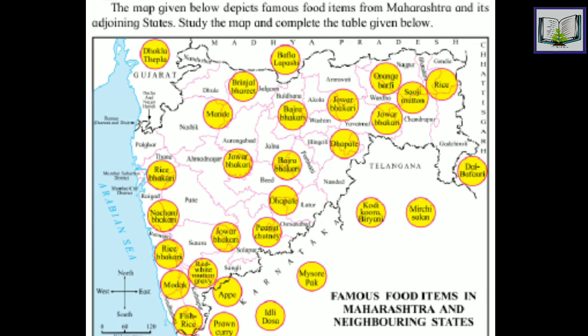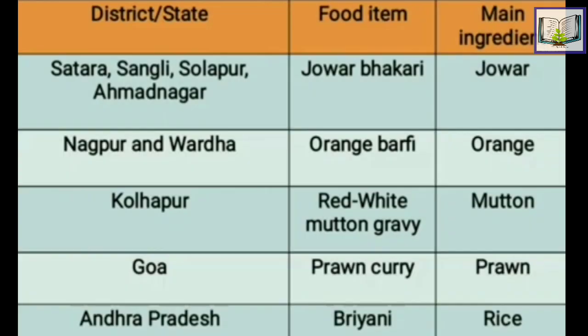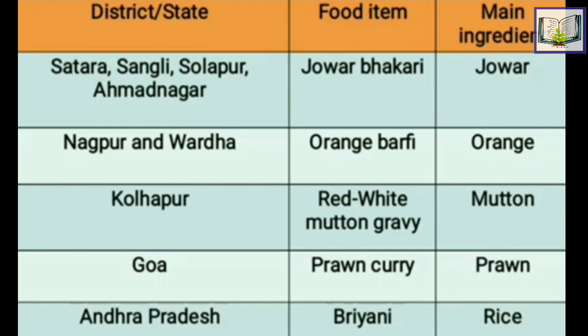This is a map of famous food items from Maharashtra and its adjoining (neighboring) states. In Gujarat, famous food items are dhokla and thepla. In Karnataka, idli, dosa, and Mysore paak are famous. In Telangana, mirchi salan is a famous food item. Let's make columns with the state name, food items, and main ingredients. Satara, Sangli, Solapur, Ahmednagar — jawar bhakri, main ingredient jawar. Nagpur and Wardha — orange barfi, main ingredient orange. Kolhapur — red and white mutton curry, main ingredient mutton. Goa — prawn curry, main ingredient prawn. Andhra Pradesh — biryani, main ingredient rice.